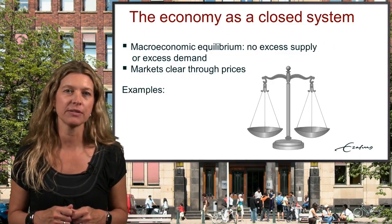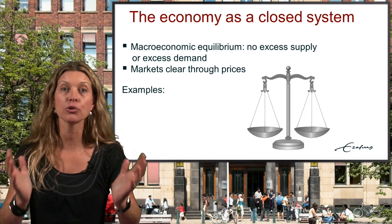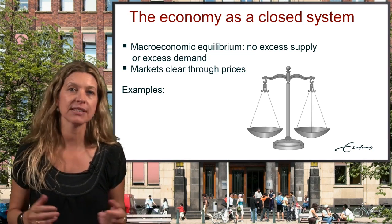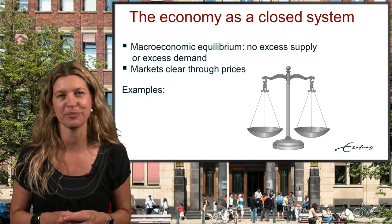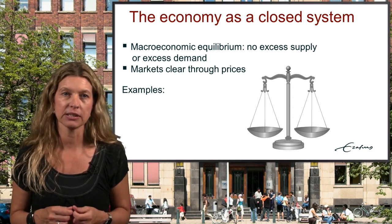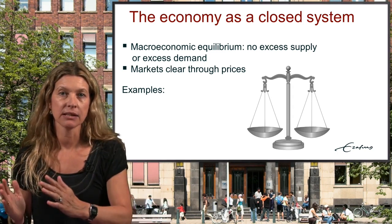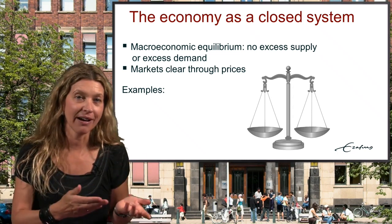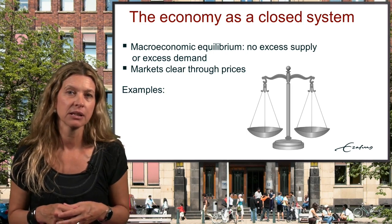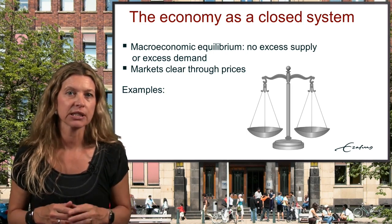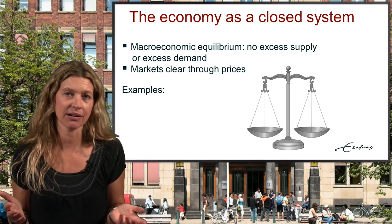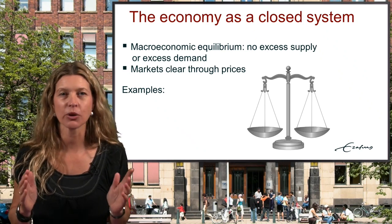Neoclassical economic theory regards the economy as a closed system. In such a system there is equilibrium, and if not, the system will soon move towards a new equilibrium. Macroeconomic equilibrium not only means that AS equals AD — that is, aggregate supply equals aggregate demand — as in post-Keynesian economics, but also that at this point there will be no excess supply or excess demand in any market. In other words, all markets will clear.